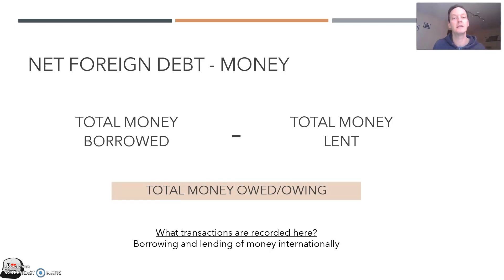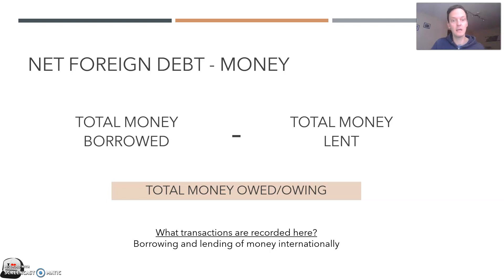That word 'net' just means one thing minus another — what's the balance? So this net number is the total money that Australia is owed, or the total money that Australia owes, once you cancel those two things out. This number is represented as a single figure: total money borrowed minus total money lent.